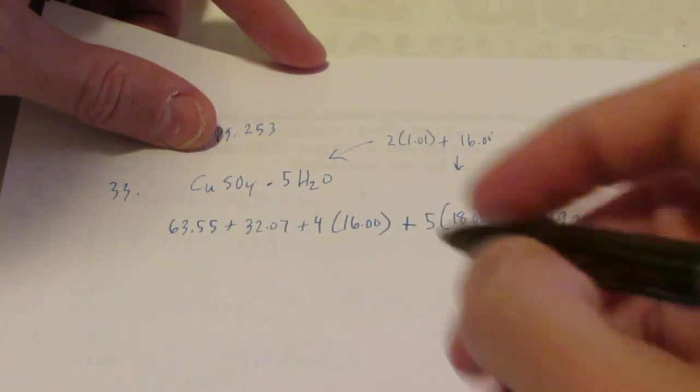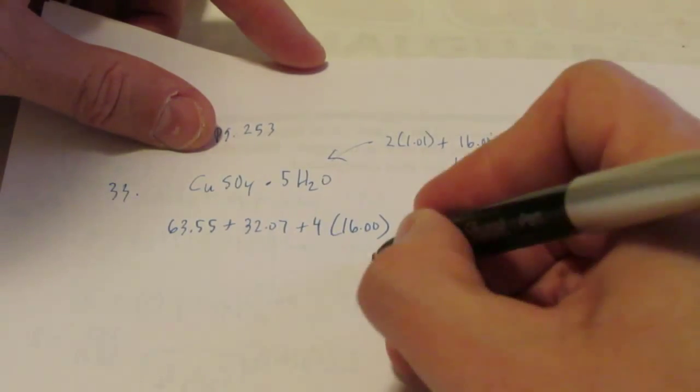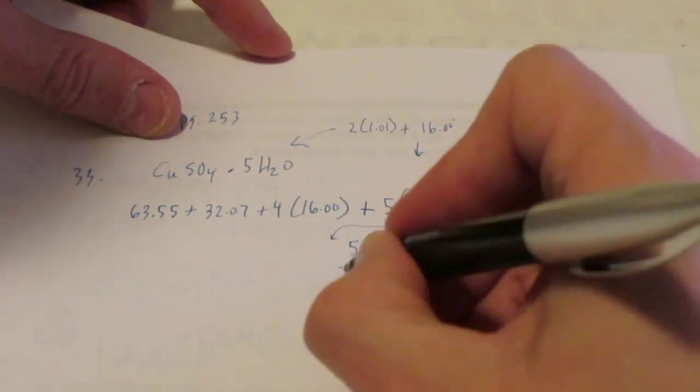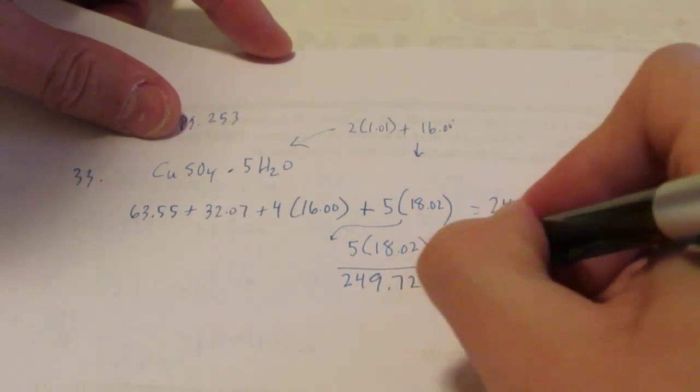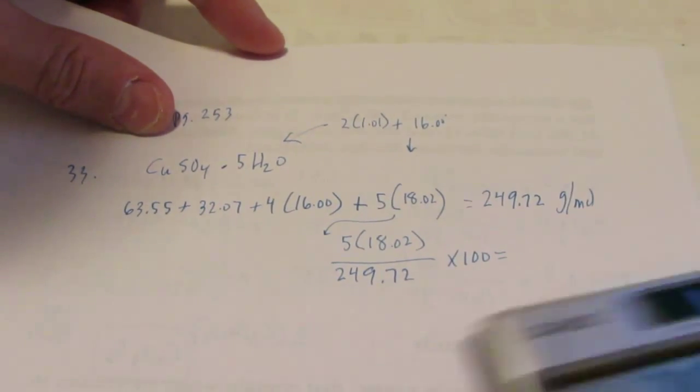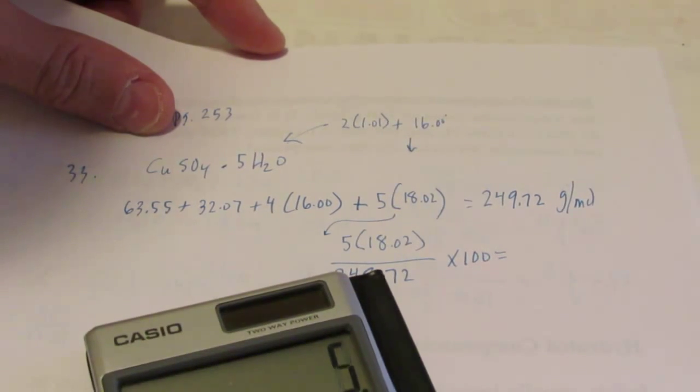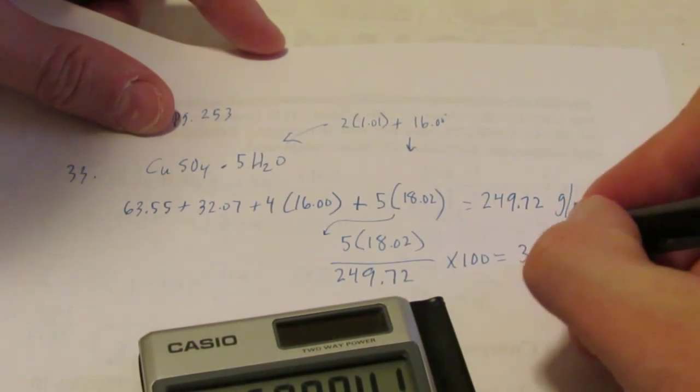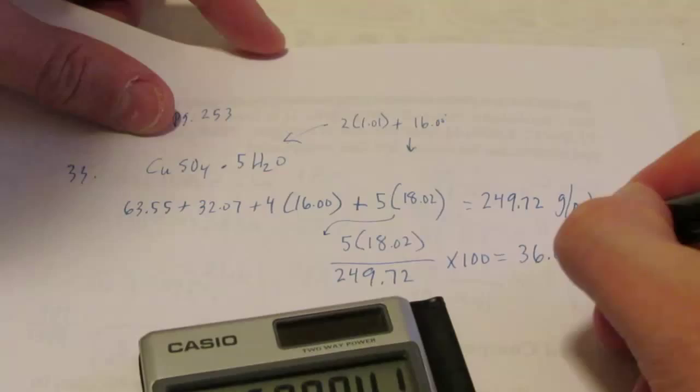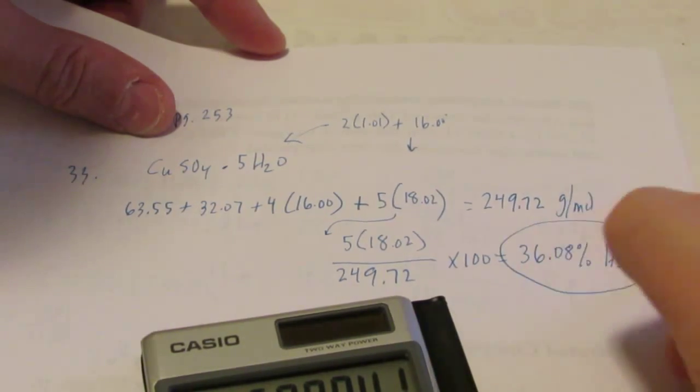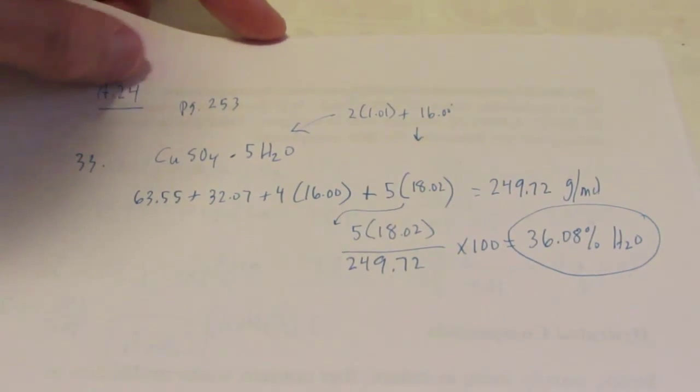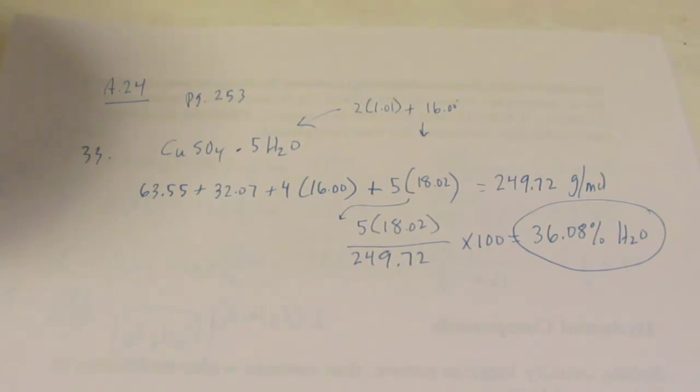Now what's the percent by weight water? So what I want to do is I want to take my weight of water, five times 18.02, divided by the total weight of the compound, 249.72. And then I'll write that as a percentage. So here we go, five times 18.02 divided by 249.72 gives me 36.08% H2O. The rest of it would be what we call the anhydrous compound without water. So that's number 33 in your homework tonight.